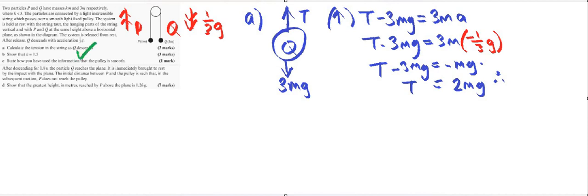Now for part b, I'm told that I've got to show that k equals 1.5. We can see k is actually the unknown in the mass. So I'm going to write equation of motion for P. P also is being held up by tension.